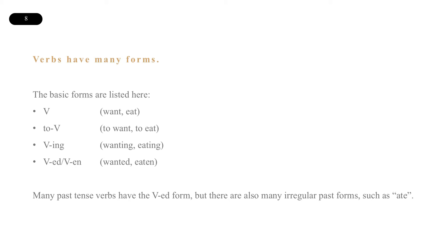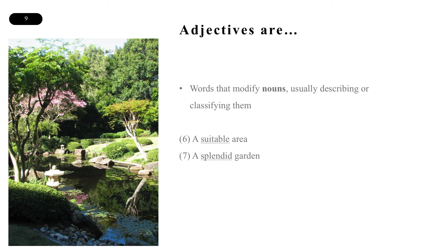And the past participle, which is generally an -ed or -en ending. Many past tense verbs have the past participle form, but there are also many irregular past forms, such as ate. Adjectives are words that modify nouns, usually describing or classifying them — so a suitable area, where suitable is the adjective, and a splendid garden.